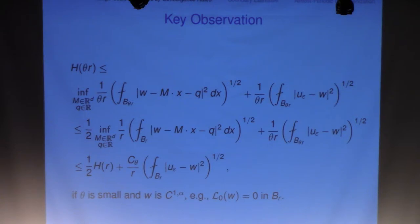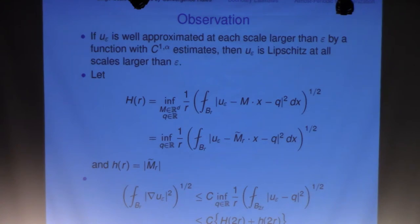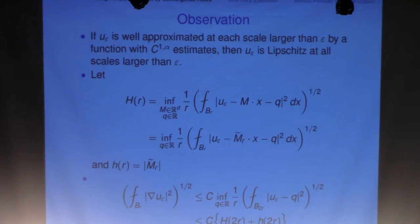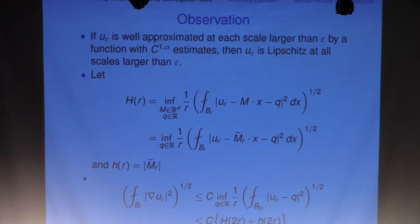That is the key observation. Roughly speaking, what this means is: if you have a function which can be well approximated by some C^1 function with a C^{1,alpha} estimate — the scaled version — for all scales greater than the parameter epsilon, then your function will be Lipschitz. It doesn't have to be a solution; this is a general kind of statement.